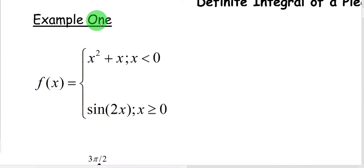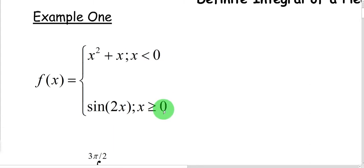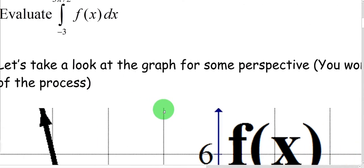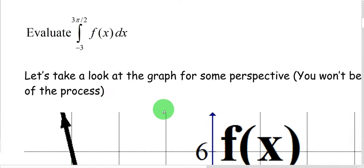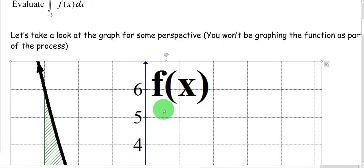Keep in mind the different pieces overlap at 0 — one piece is for x less than 0, and one is for x greater than or equal to 0. Let's take a look at the graph of this function to see what it looks like.